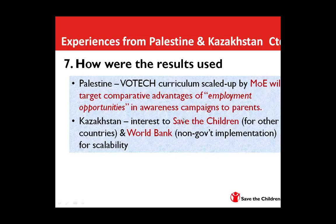Thank you, Larry, Allison, and Mulu for your presentations. I'm just going to jump straight into the questions so that we have as much time as possible. Allison, the first couple of questions are for you. The first question is: how long did the theory of change exercise take with the coalition, and do you have any tips for keeping that exercise manageable? The second question is whether in your mixed methods design there was a randomized component, and if so, can you talk about that a bit more — especially in terms of the challenges of randomizing interventions using a rights-based approach?